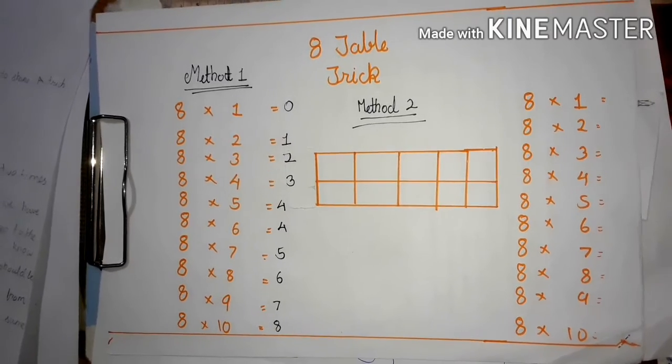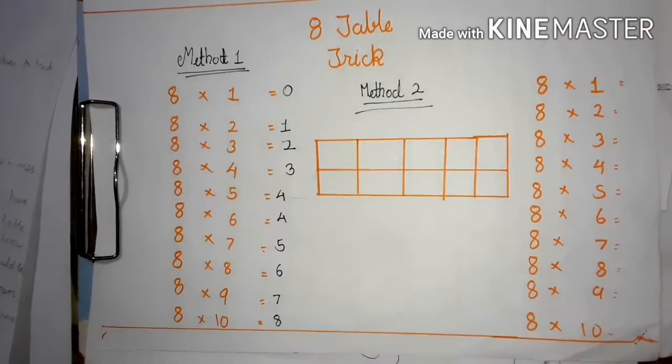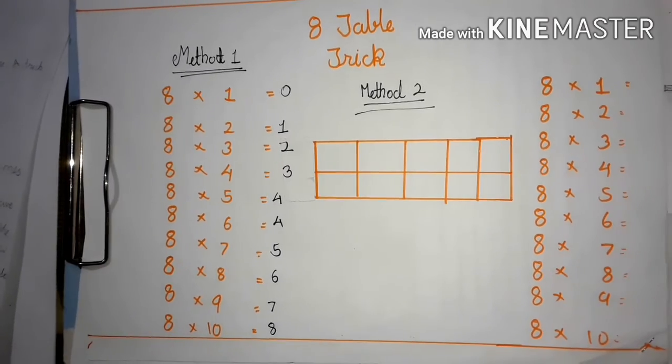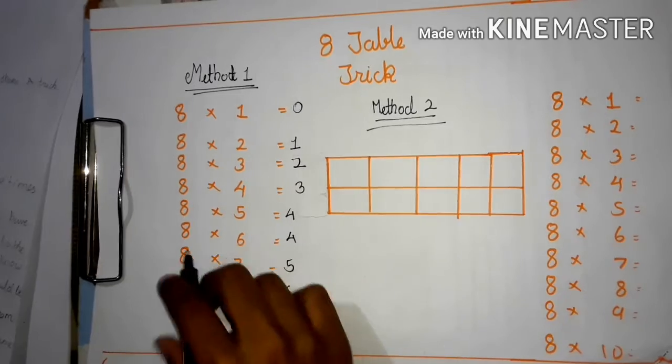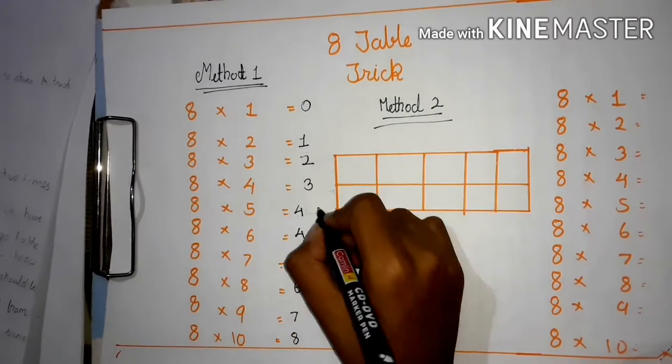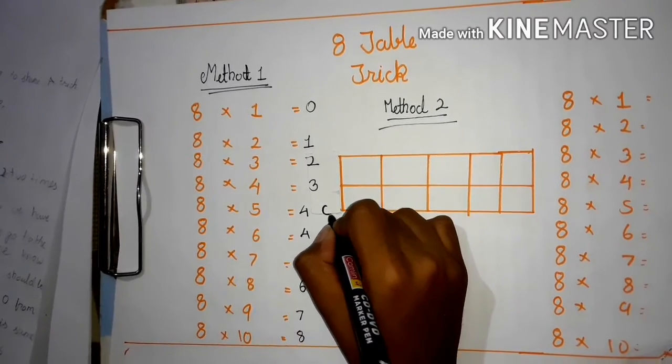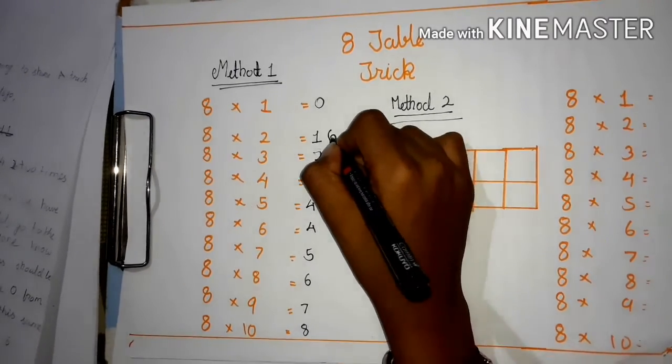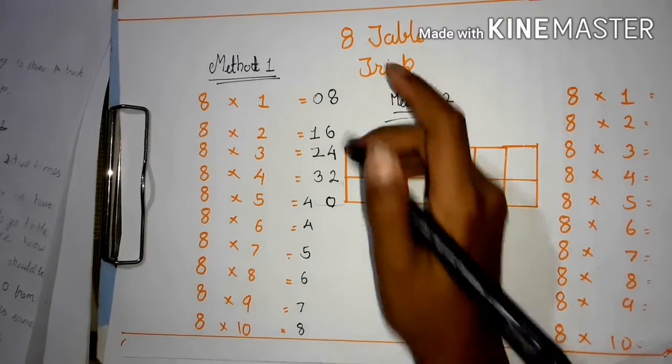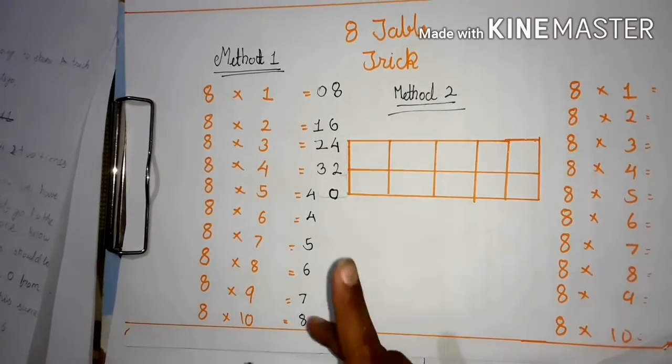So let's move to the ones column. As usual, we all know the even numbers. So from 8 times 5, write 0, 0, 2, 4, 6, and 8. Write the same trick as below.